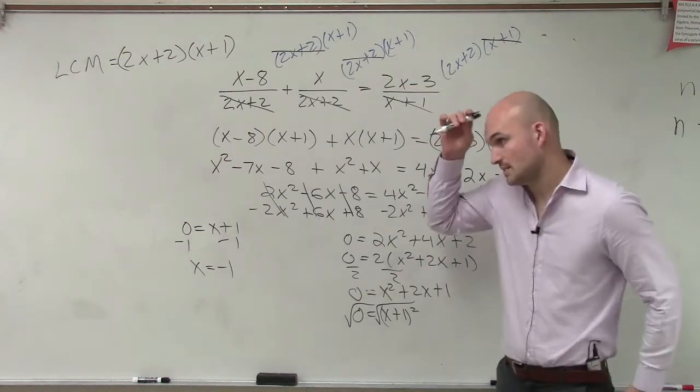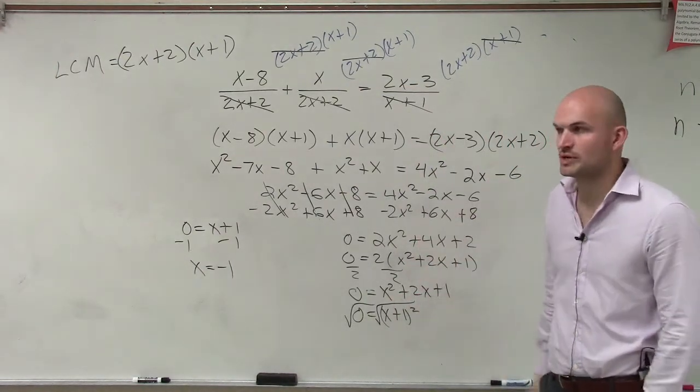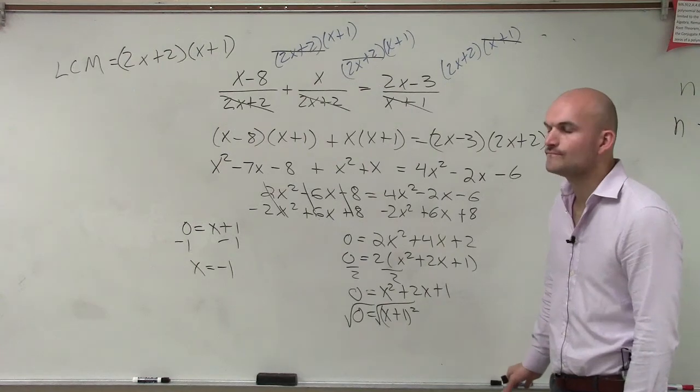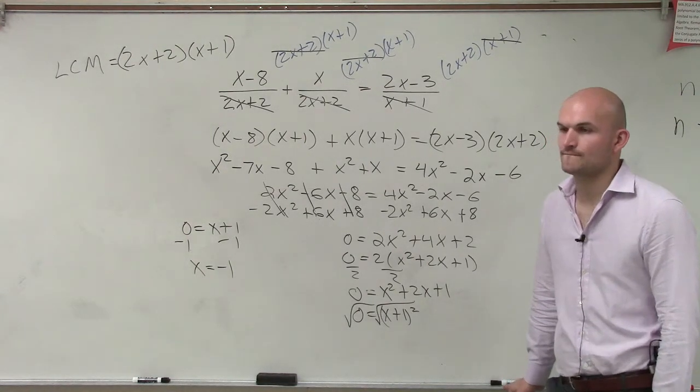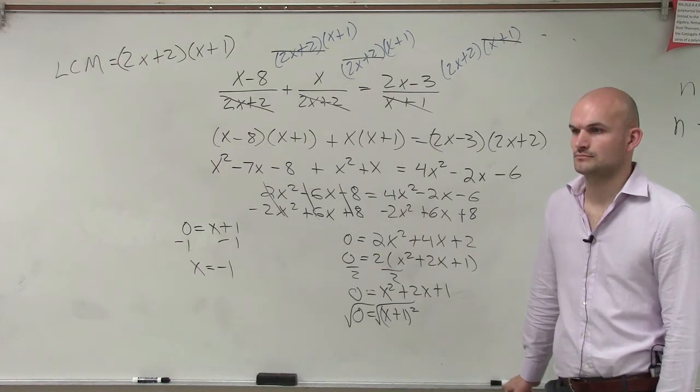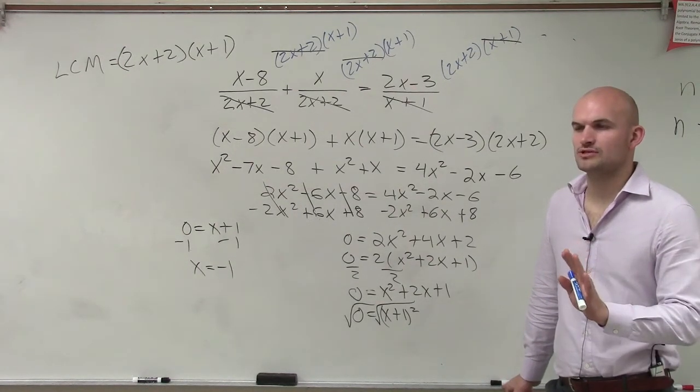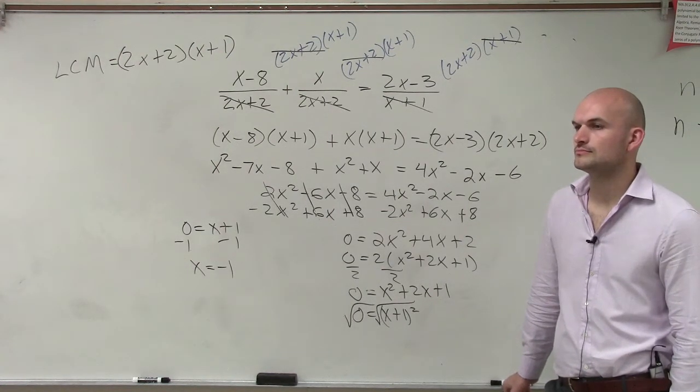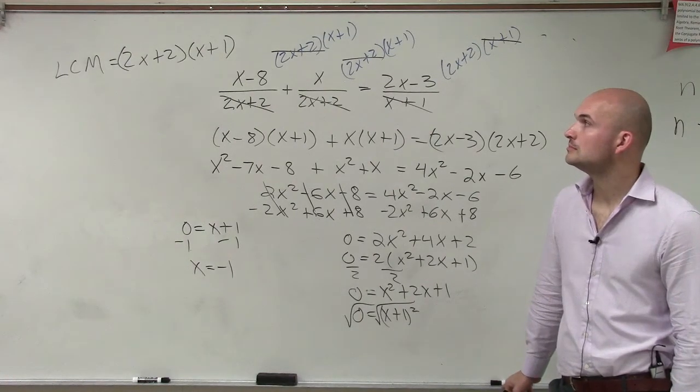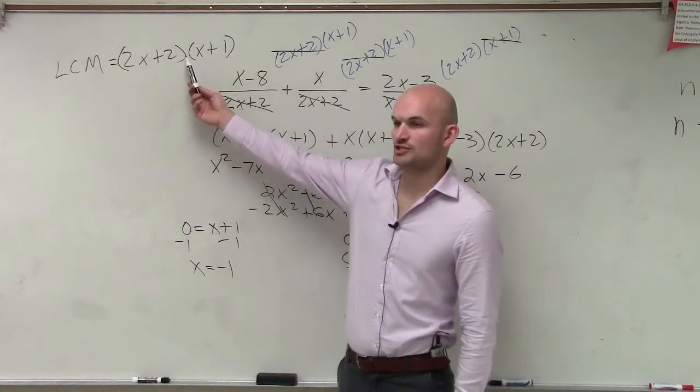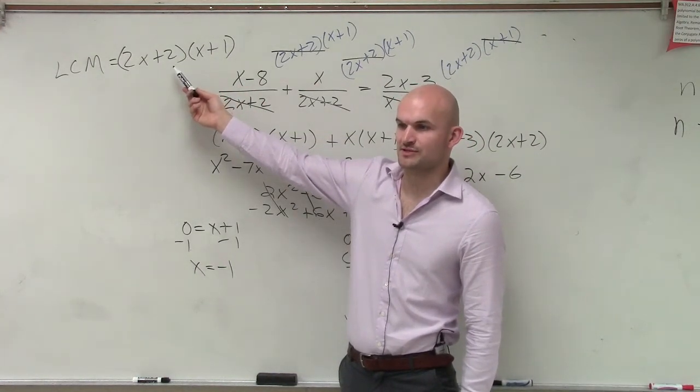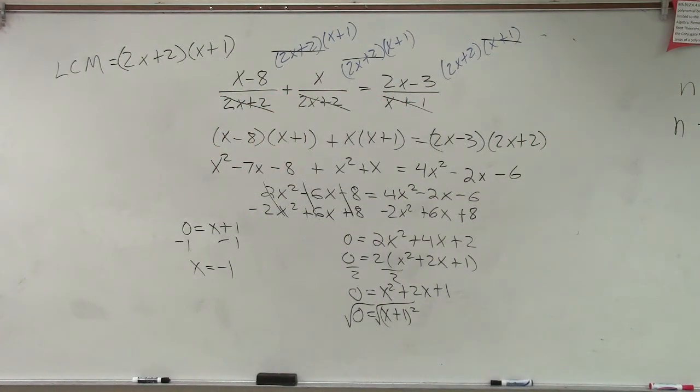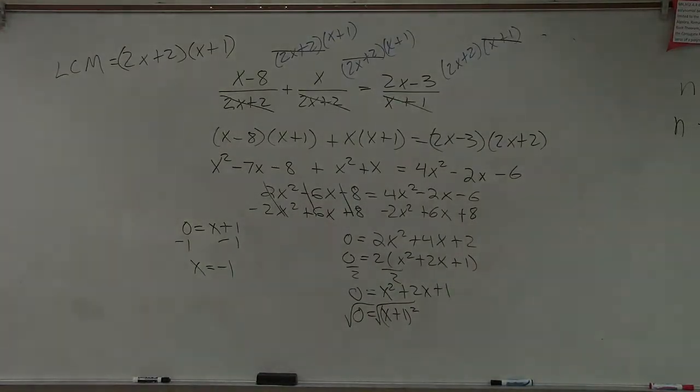You also could have done x plus 1 times x plus 1 equals 0, and then you got two values of x equals negative 1. That's fine. You still get the same answer, right? I made the LCM x plus 1, and then for the 2x plus 2, I made that 2 times x plus 1. And so when I x'd out all the x plus 1s, I had the 2 left. So what you did is you factored out a 2 and just left it as 2 times x plus 1? Yeah. Yeah, that's fine. Can you just multiply the one on the right by 2?